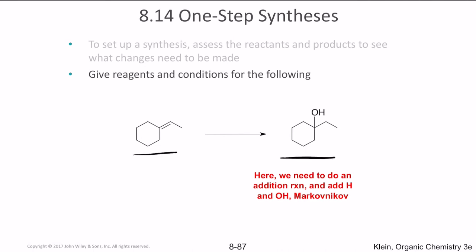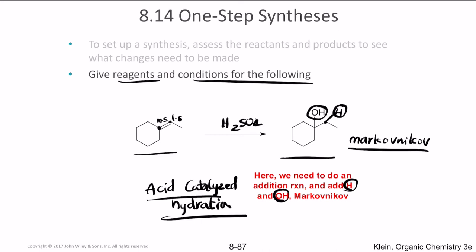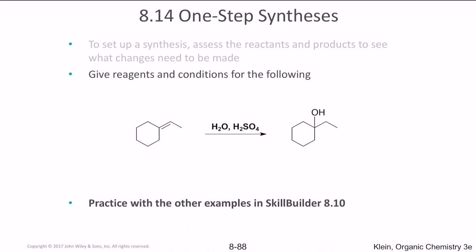They give a reaction and ask us to predict the reagents and conditions. Notice that there is an OH group on one carbon; if nothing else is shown, there is a hydrogen there — this is a hydration reaction, adding hydrogen and OH. The OH is on the more substituted carbon and the hydrogen is on the less substituted carbon, so this is a Markovnikov addition. The only Markovnikov addition we can use here is acid-catalyzed hydration, requiring H2SO4 and H2O.